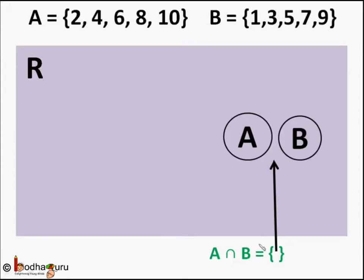Or their intersection is a null set or set with no element. So in this case the set A and B are called disjoint sets. That is they don't have any common element between them. And their intersection is a null set.